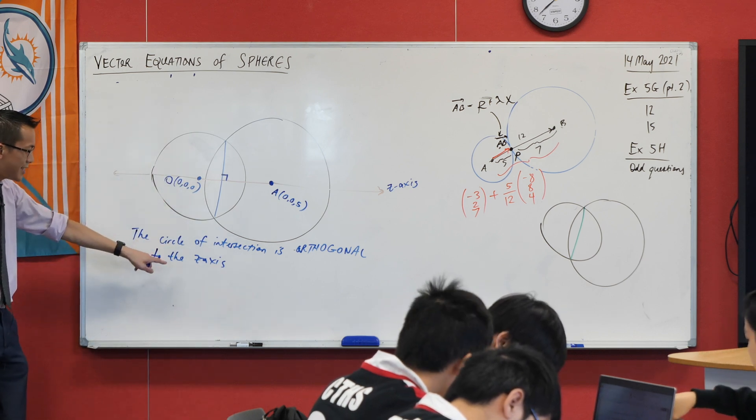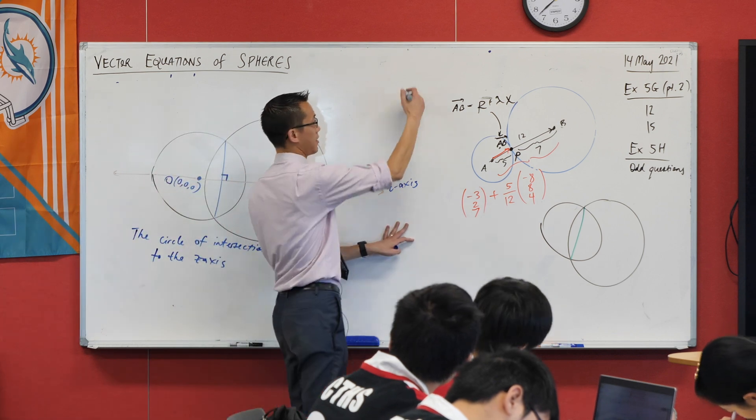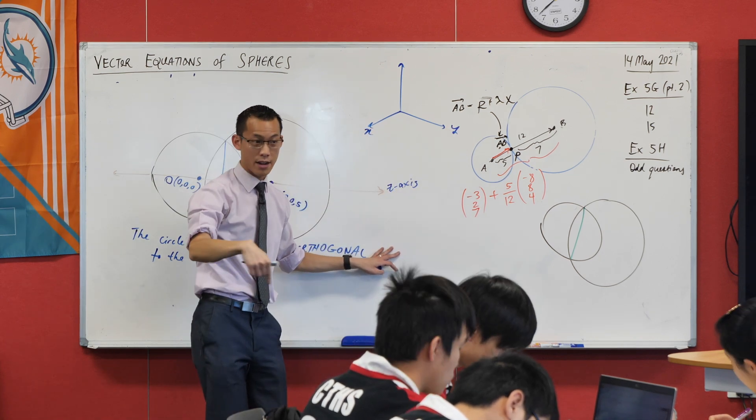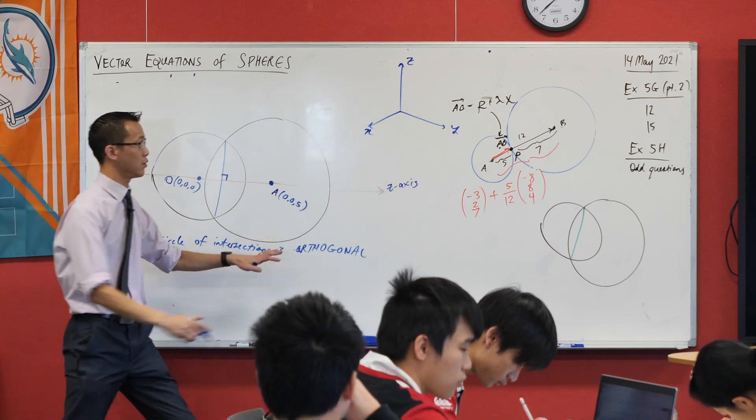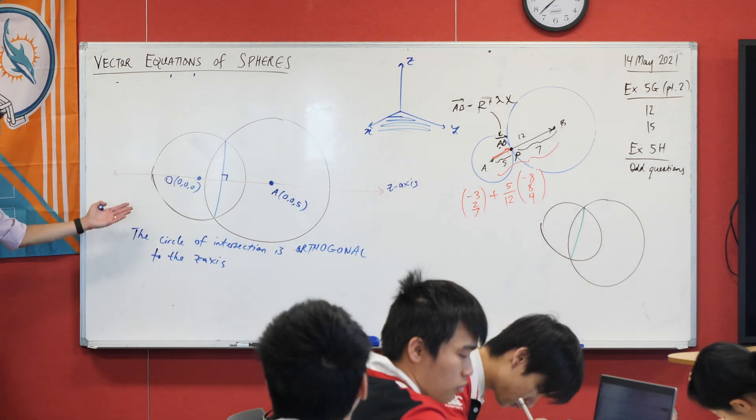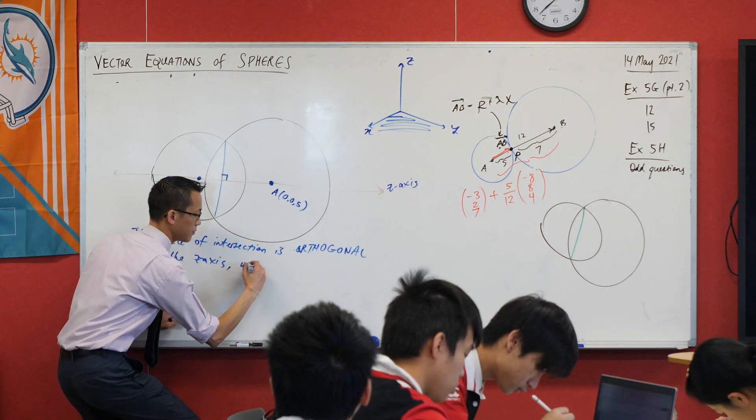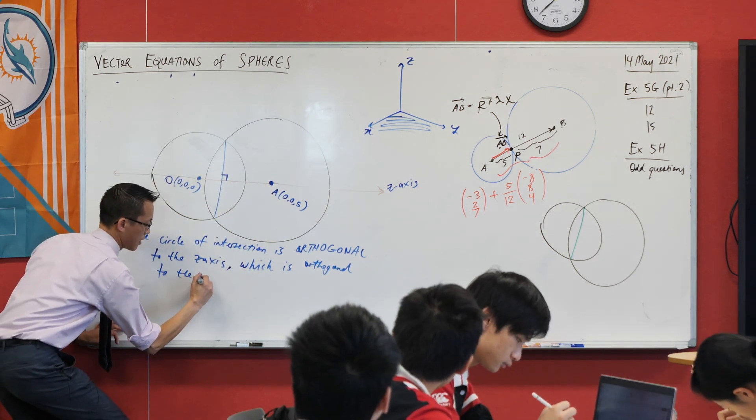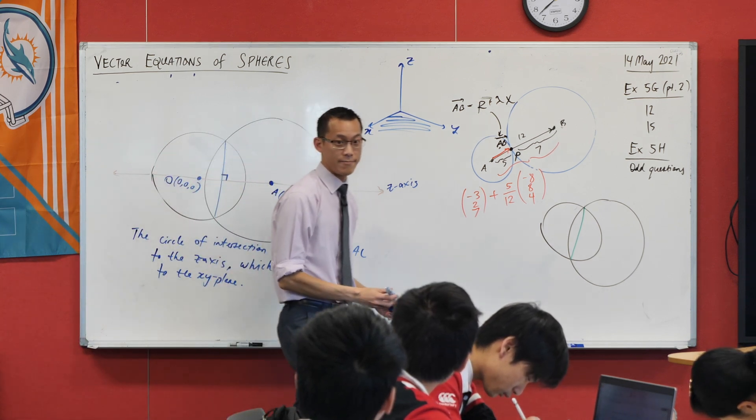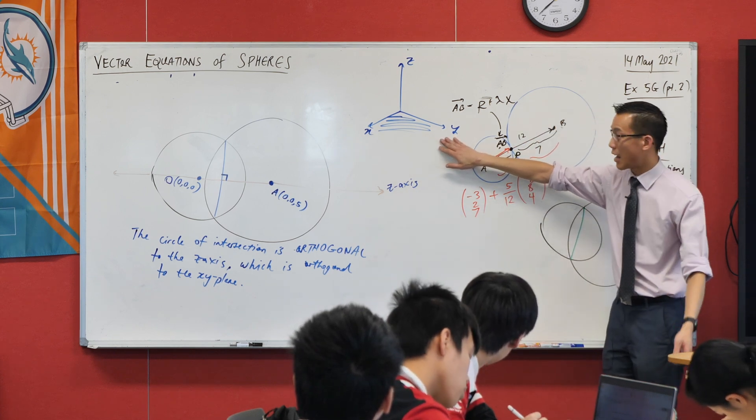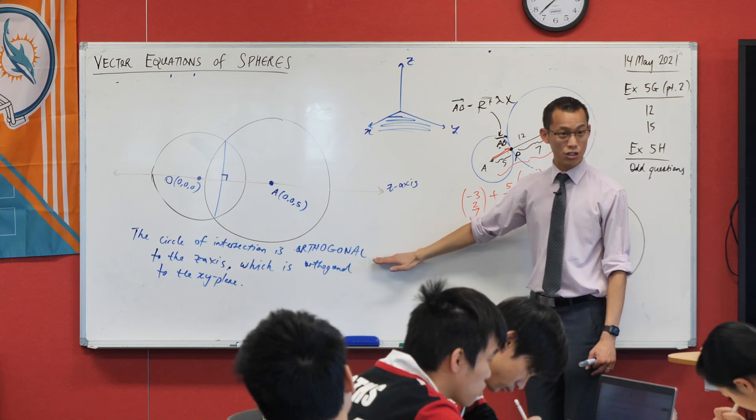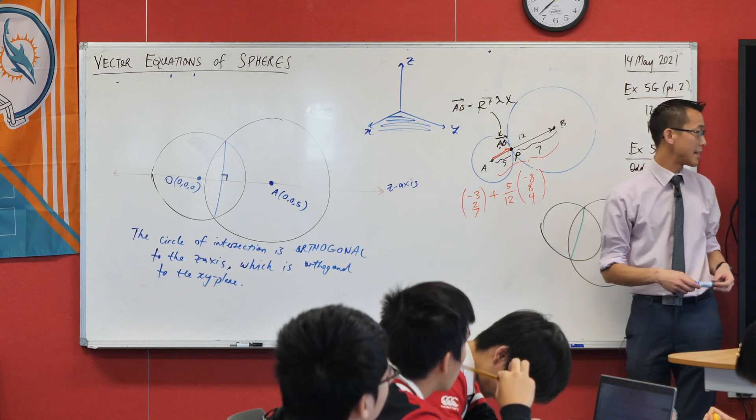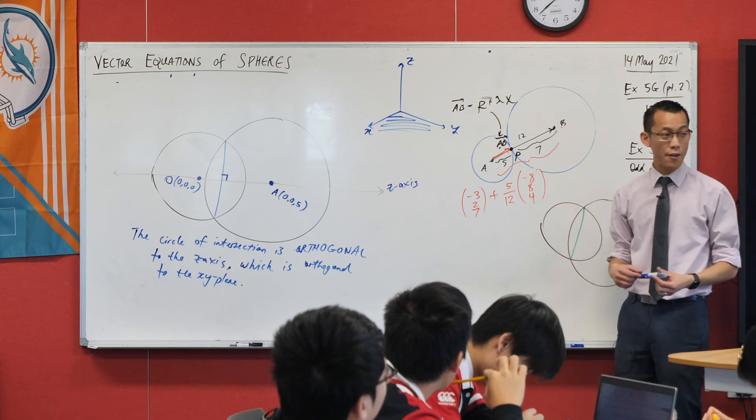The circle of intersection is orthogonal to the z axis. But since the z axis is itself orthogonal to the xy plane, think about how we normally draw this. Here's the xy plane that we're looking down at, and there goes the z axis perpendicular to this xy plane. The circle of intersection is orthogonal to the z axis, which is orthogonal to the xy plane. This is my reasoning.